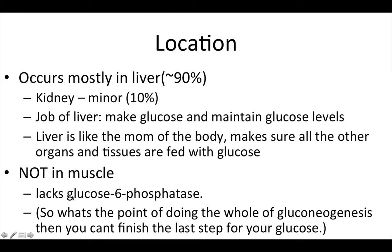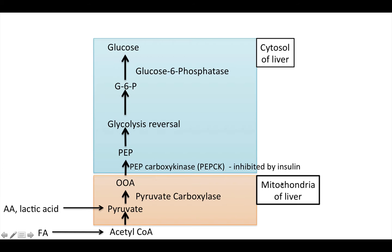Glucose-6-phosphatase is the enzyme that converts glucose-6-phosphate to glucose. The muscle uses a lot of glucose, and there's no point in the muscle trying to do gluconeogenesis if you go through the whole process, use all that energy, and then get to the very last step and can't convert glucose-6-phosphate to glucose because you lack this enzyme.